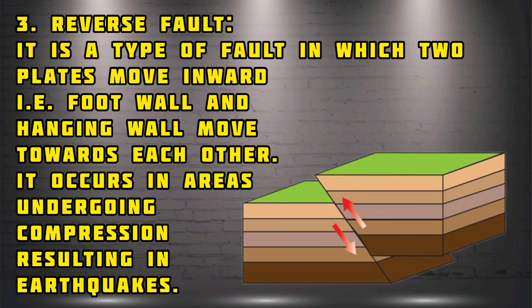Reverse fault: it is a type of fault in which two plates move inward. For example, the footwall and hanging wall move towards each other. It occurs in areas undergoing compression, resulting in earthquakes.